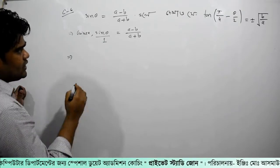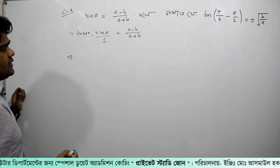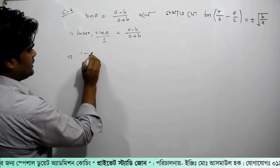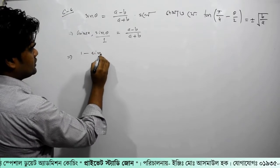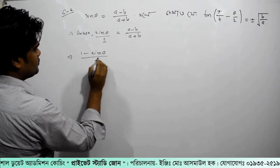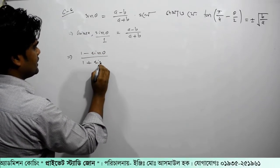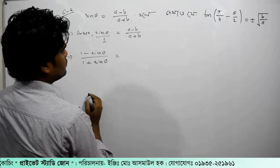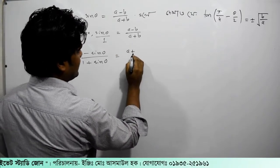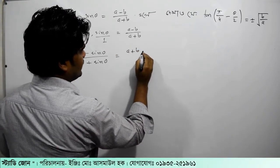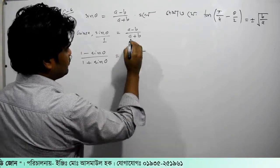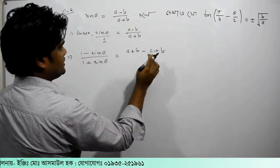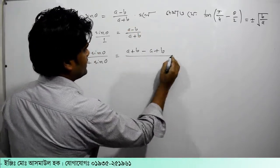So we have to do this in the next step. We have 1 minus sin θ, and we have 1 plus sin θ, equal to. Now we need to do this — the minus operator is plus b, and the minus is plus b.